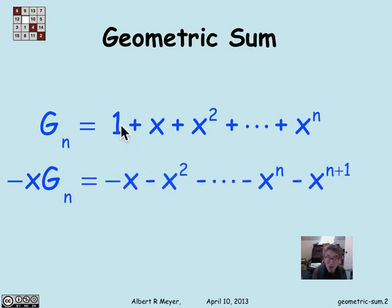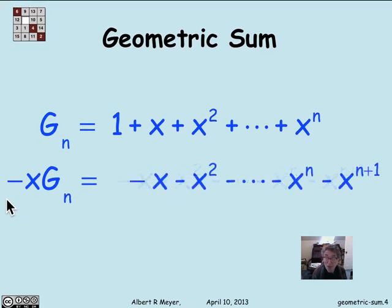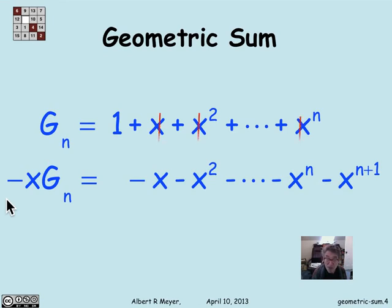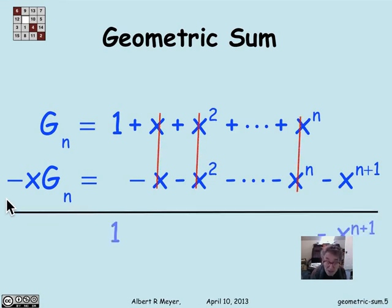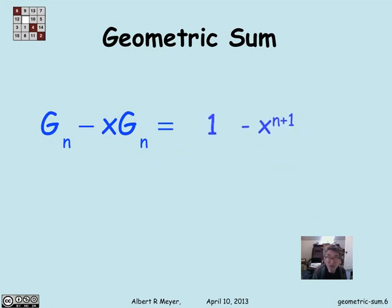Here's x times g_n. I'm going to subtract it: 1 times x is minus x, x times x is x squared — subtracting all the way down. x to the n minus 1 times x gives the x to the n term, and finally there's an extra term from right-shifting: x to the n becomes x to the n plus 1. Lining the terms up to subtract, all the terms in the middle cancel, which is very cool — we've just found that g_n minus x times g_n equals 1 minus x to the n plus 1.